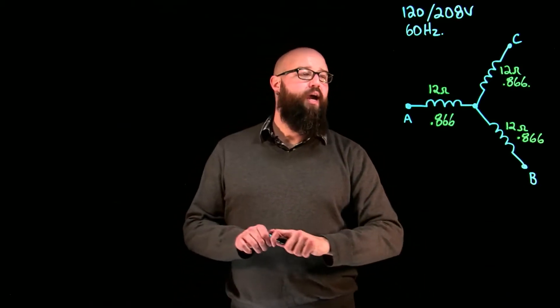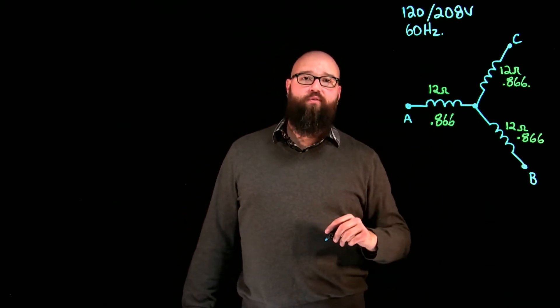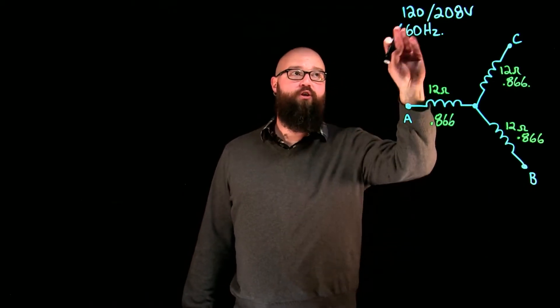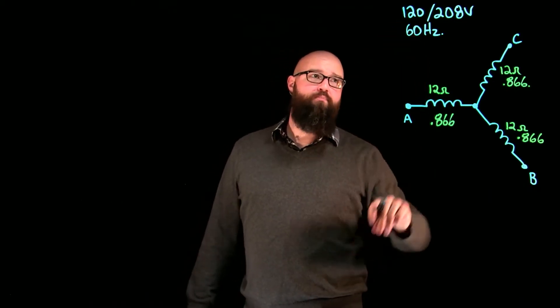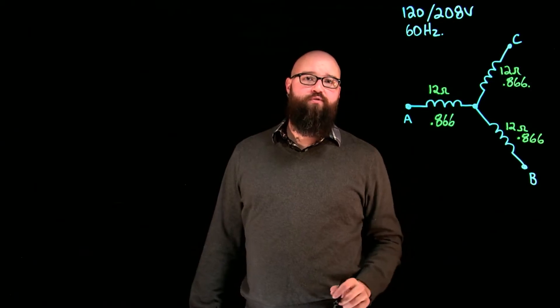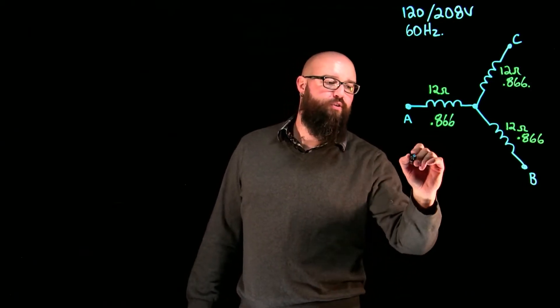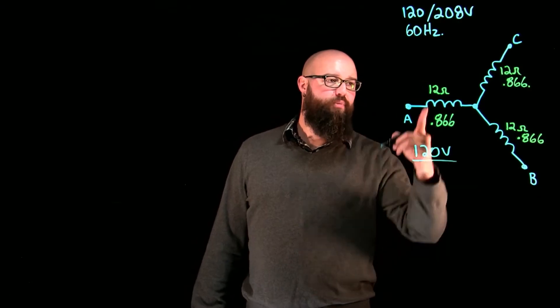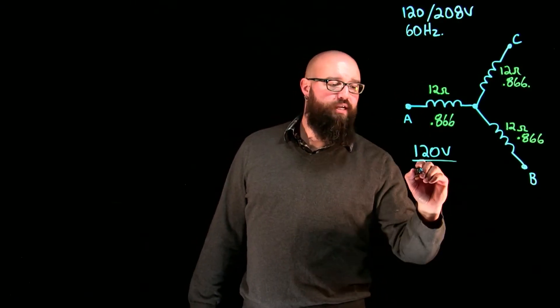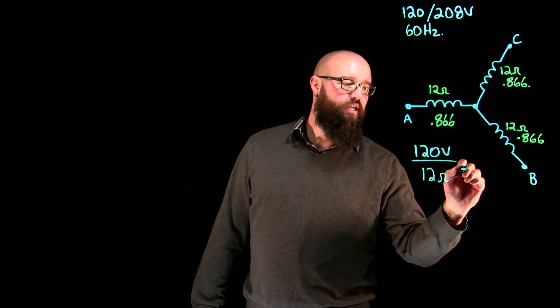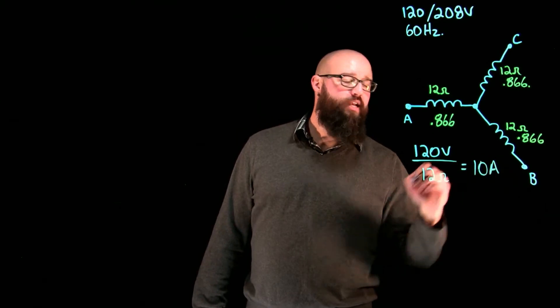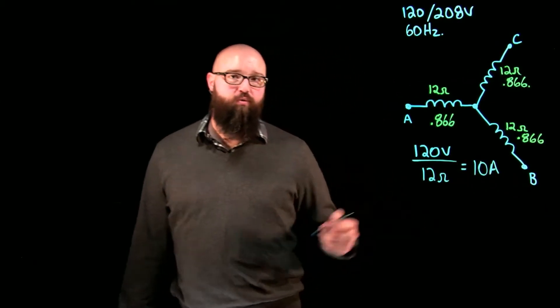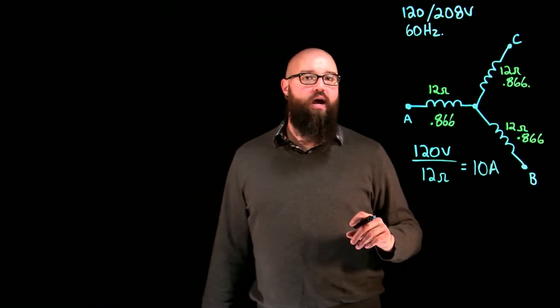Using Ohm's Law, we have a 120/208 volt system so our phase voltage is 120 volts. Our line voltage multiplied by root 3 is 208. 120 volts per phase divided by 12 ohms of impedance per phase gives us 10 amps per phase which also equates to 10 amps per line.